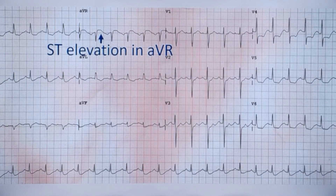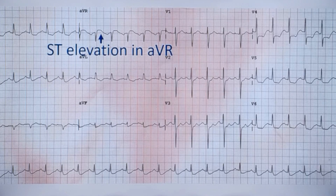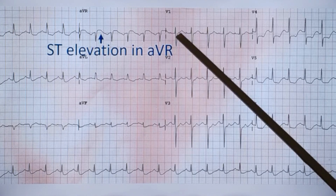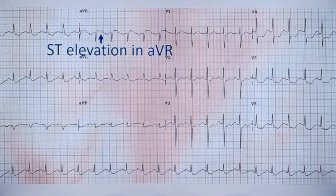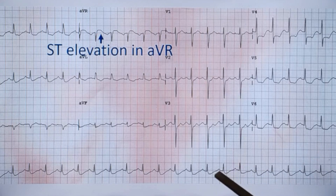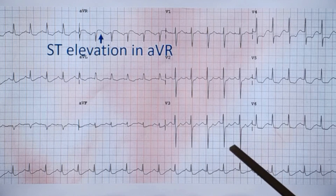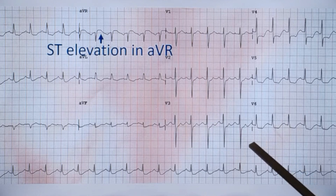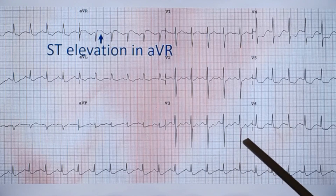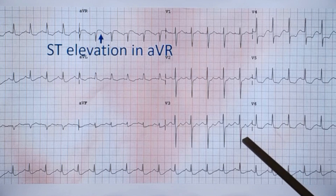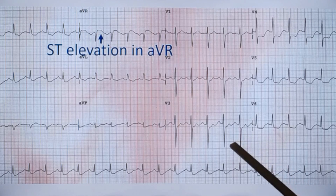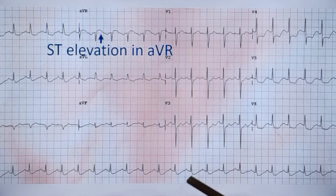This ECG also shows significant ST elevation in AVR suggesting left main disease, but there is no ST elevation in V1. Other leads show extensive ST depression, which is quite significant. The patient had features of pulmonary edema already documented by a bedside chest X-ray. After initial stabilization, this person underwent angiography which showed distal tight left main stenosis, along with other lesions — because left main lesions are not always isolated; there will be lesions in other territories as well.